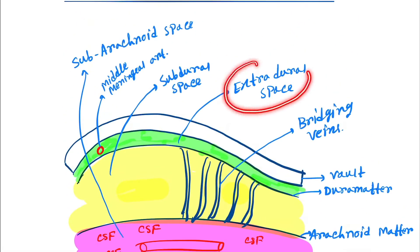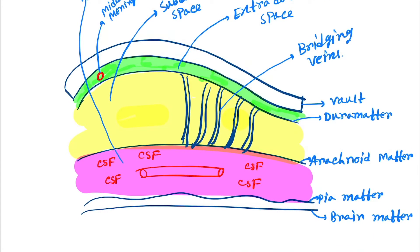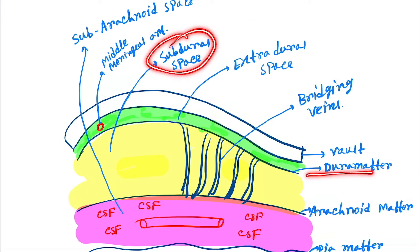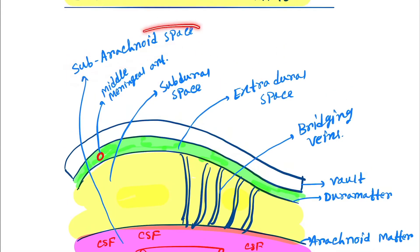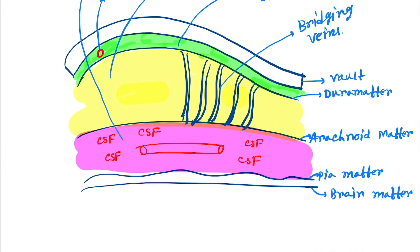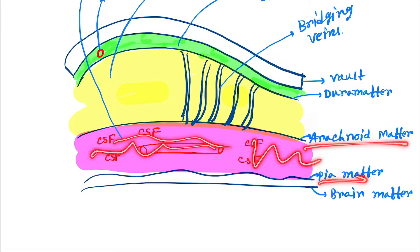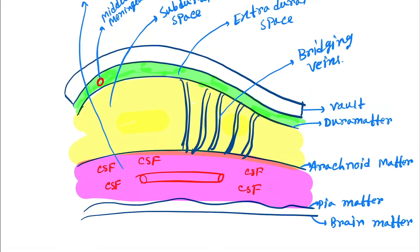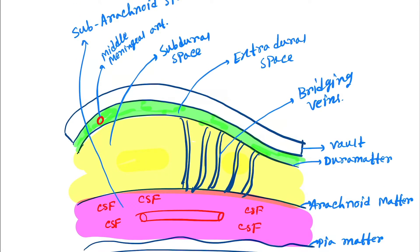Between the vault of the cranium and the dura mater, this space is known as the extradural space. Next, the subdural space is between the dura mater and arachnoid mater. Next is the subarachnoid space, between the arachnoid mater and pia mater. The subdural space contains the bridging veins.